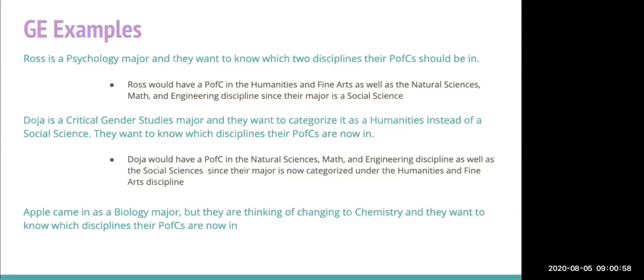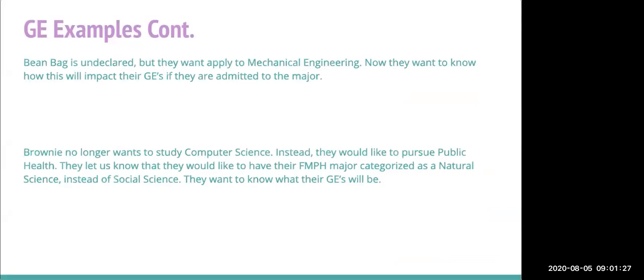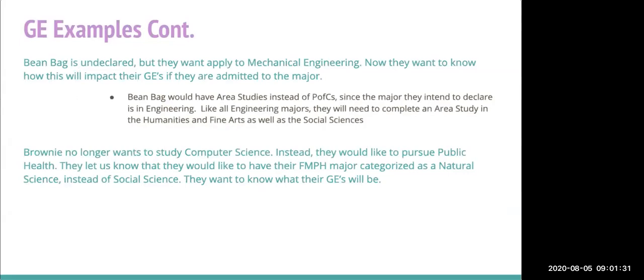Apple came in as a biology major but is thinking of switching to chemistry. Since both are natural science majors, they would still need PFCs in humanities and fine arts and social sciences. Beanbag is undeclared but wants to apply to mechanical engineering. If admitted, Beanbag would have area studies instead of PFCs, and like all engineering majors, would need to complete an area study in humanities and fine arts as well as social sciences.